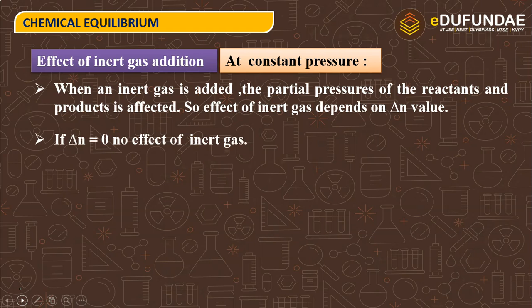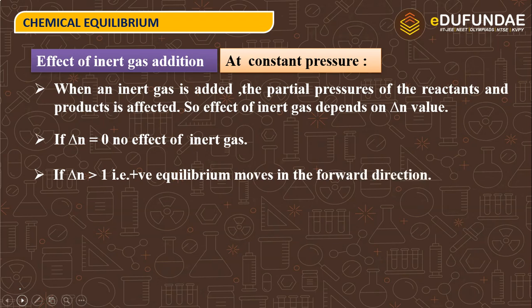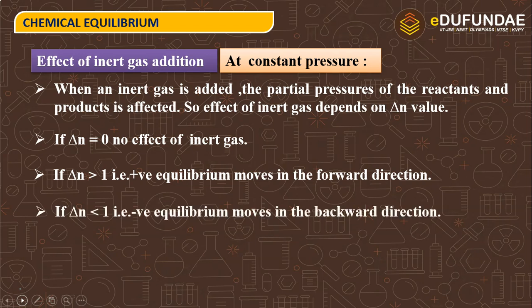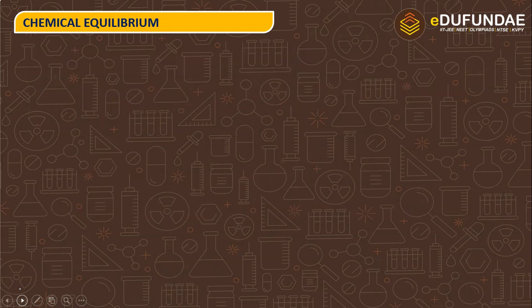If delta n equals 0, there is no effect of inert gas. If delta n g is greater than 1, or positive, equilibrium moves in the forward direction. If delta n g is less than 1, or negative, equilibrium moves in the backward direction.